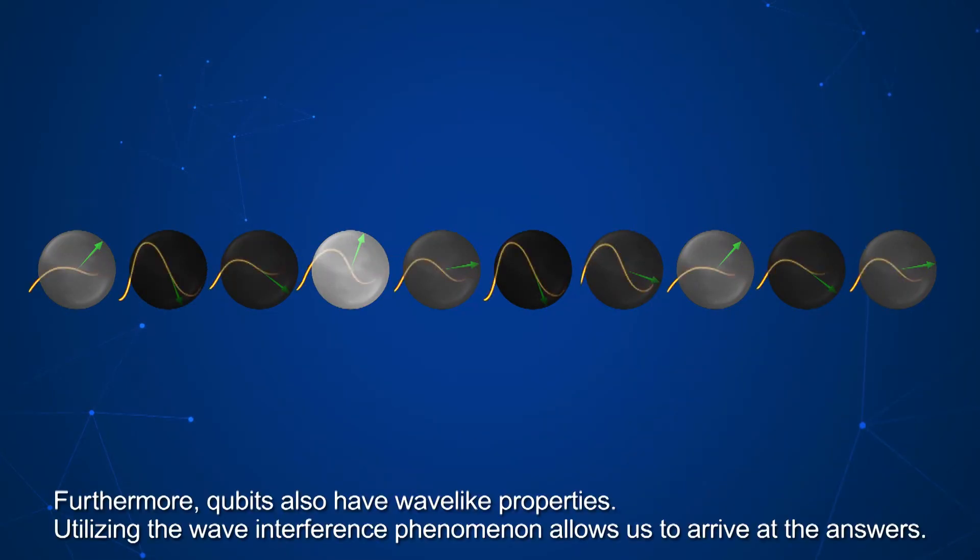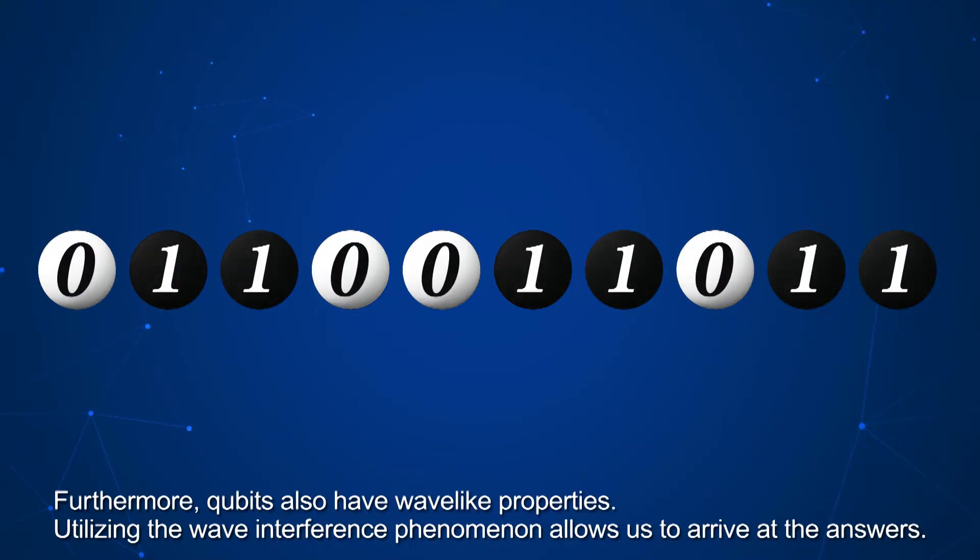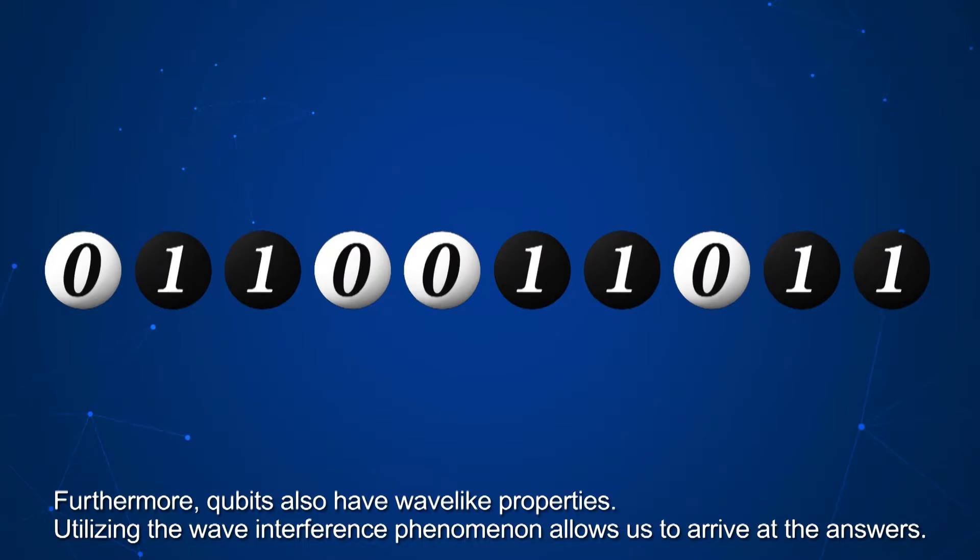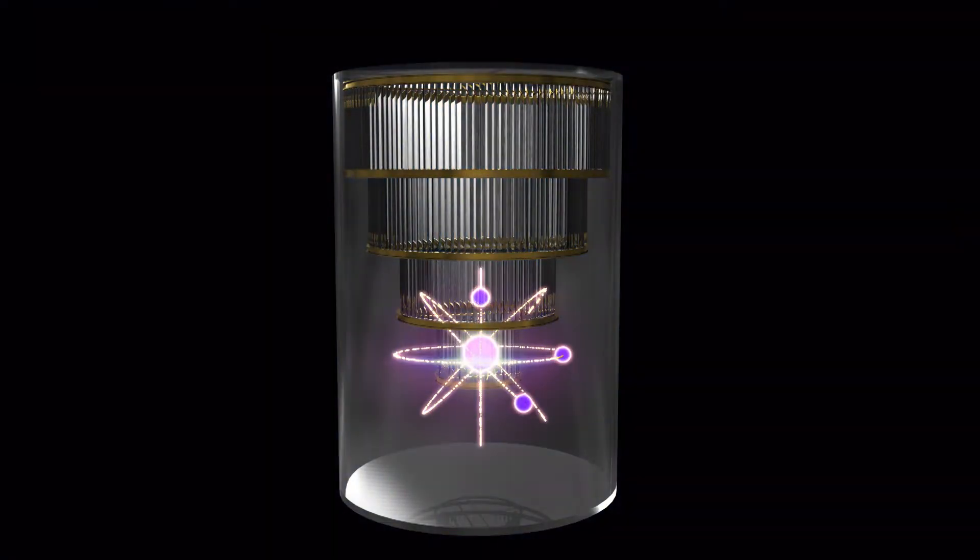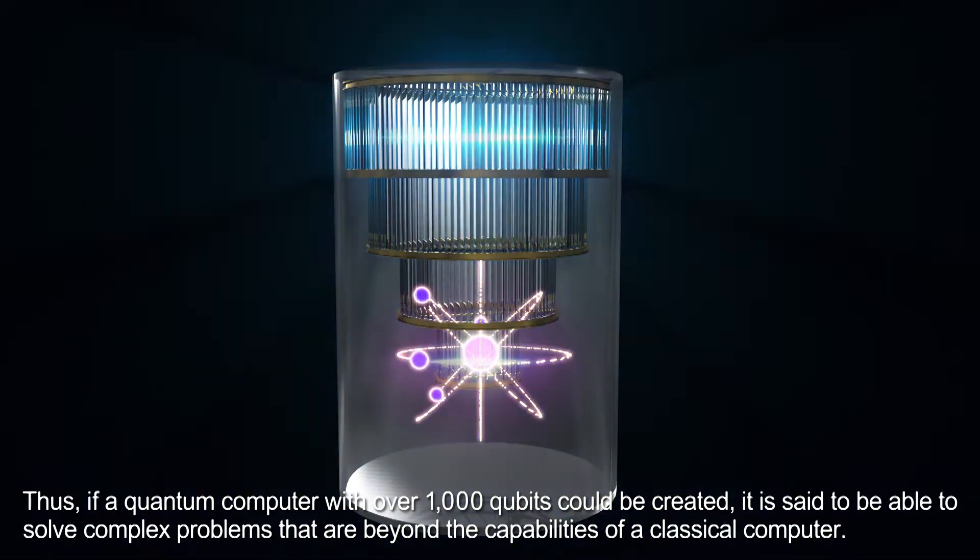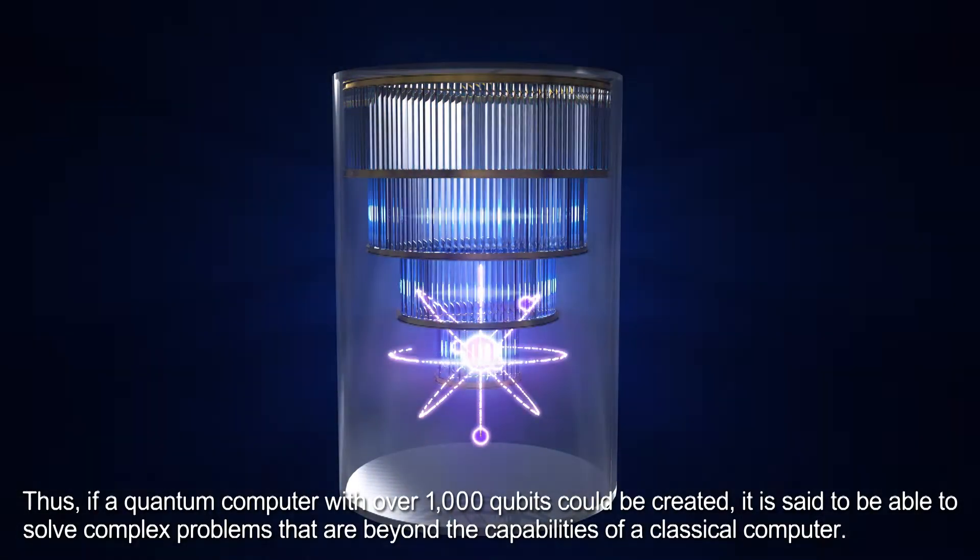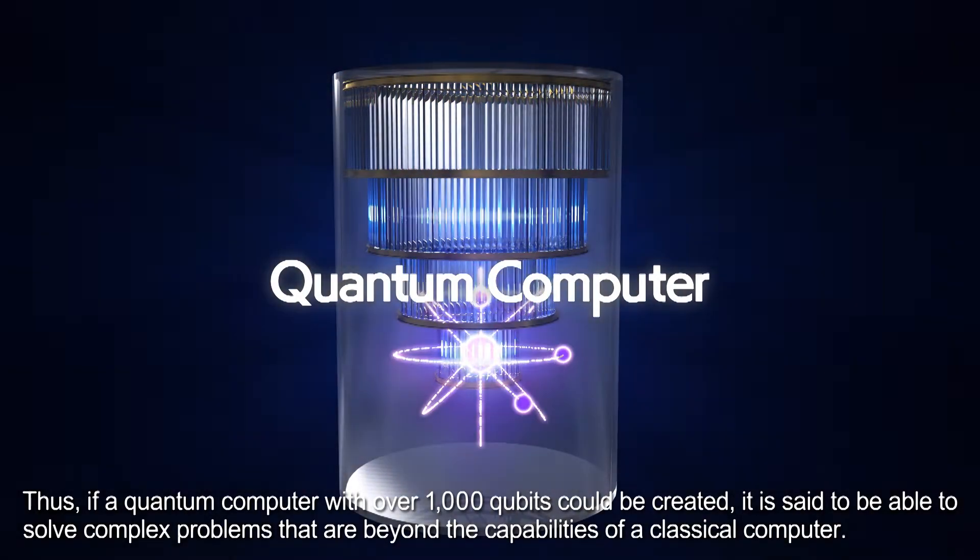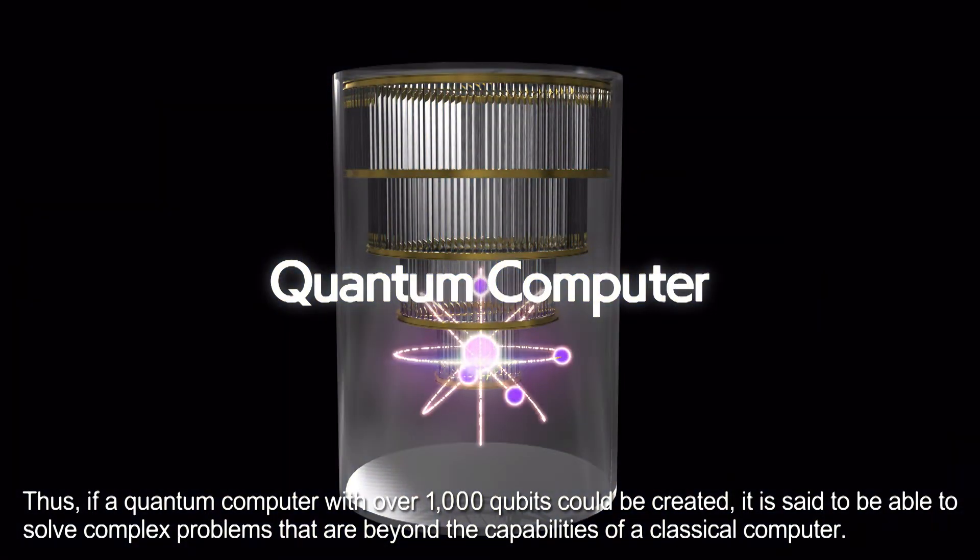Furthermore, qubits also have wave-like properties. Utilizing the wave interference phenomenon allows us to arrive at the answers. Thus, if a quantum computer with over 1,000 qubits could be created, it is said to be able to solve complex problems that are beyond the capabilities of a classical computer.